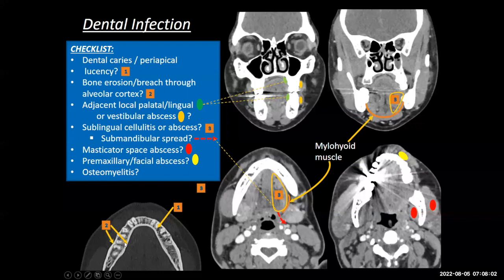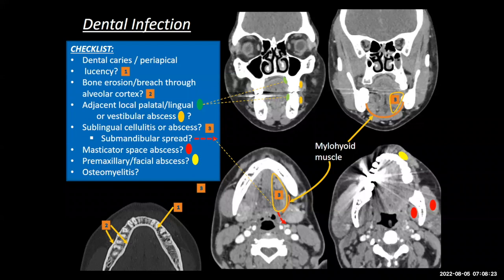Is there bone erosion? You want to look at the alveolar cortices of the maxilla and mandible. If there's a breach or erosion through this cortex — a dehiscence next to where there's periapical lucency — that might be a cause for abscess forming adjacent to that site.